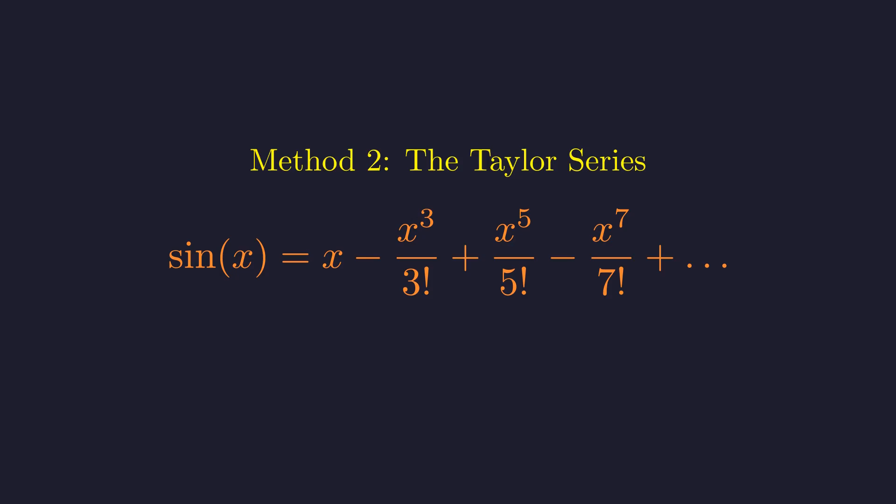Now for the second way to write this function, using a Taylor series expansion, which was well known in Euler's time. The Taylor series for sin(x) around 0 is x - x³/3! + x⁵/5! and so on.